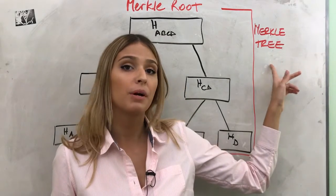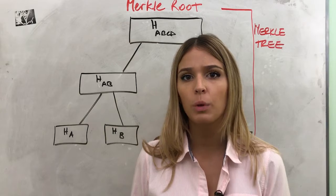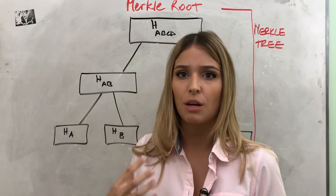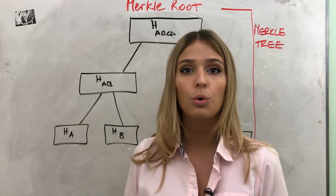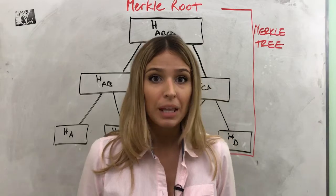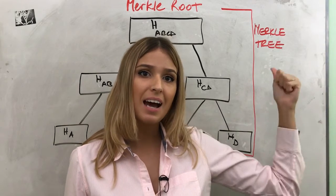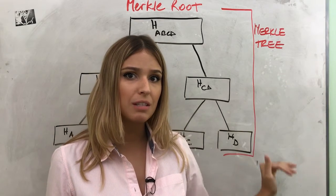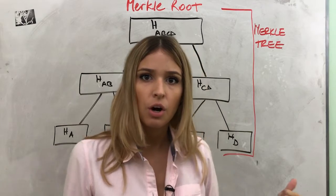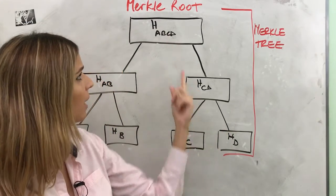Before getting into the Merkle tree, you need to know what a hash is. The same way we use fingerprints to summarize the identity of a person, we use hash codes to summarize the identity of digital information. A Merkle tree is a data structure composed of all the hashes of all the transactions in a block. We structure this information for efficiency and integrity. We take all the transaction hashes and hash them together all the way up.